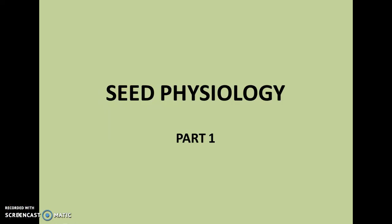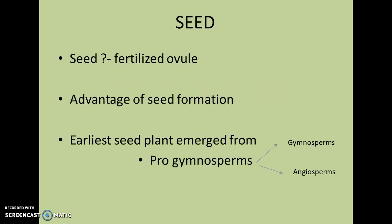Welcome to our channel Knowledge Train. Today we are going to discuss the topic seed physiology. Seeds are nothing but specialized dispersal units, or they are units of reproduction of a flowering plant — that is, they are capable of developing into a new plant. We can simply define a seed as a fertilized ovule, whether in an angiosperm or gymnosperm. Seeds can develop from ovules.